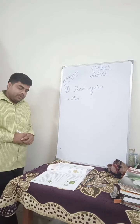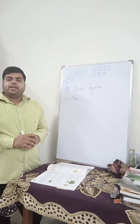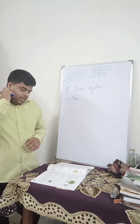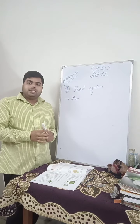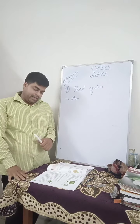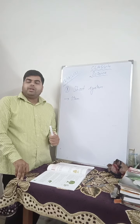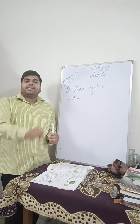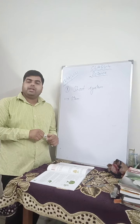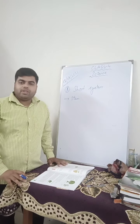Now the function of stem. The function of stem is to provide strength to the plant so that the plant can stand straight and upright. Secondly, it carries water and minerals from the roots and supplies them to each and every part of the plant.